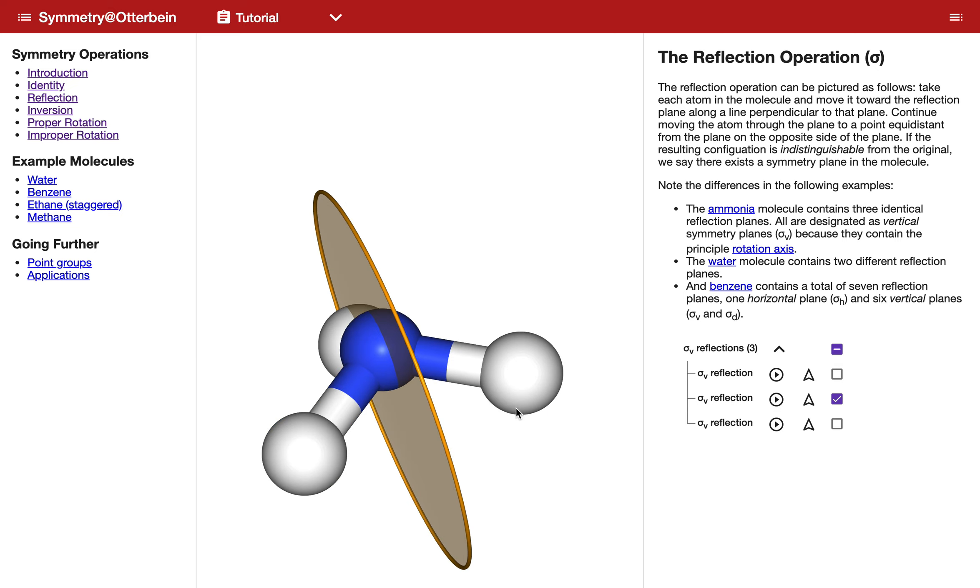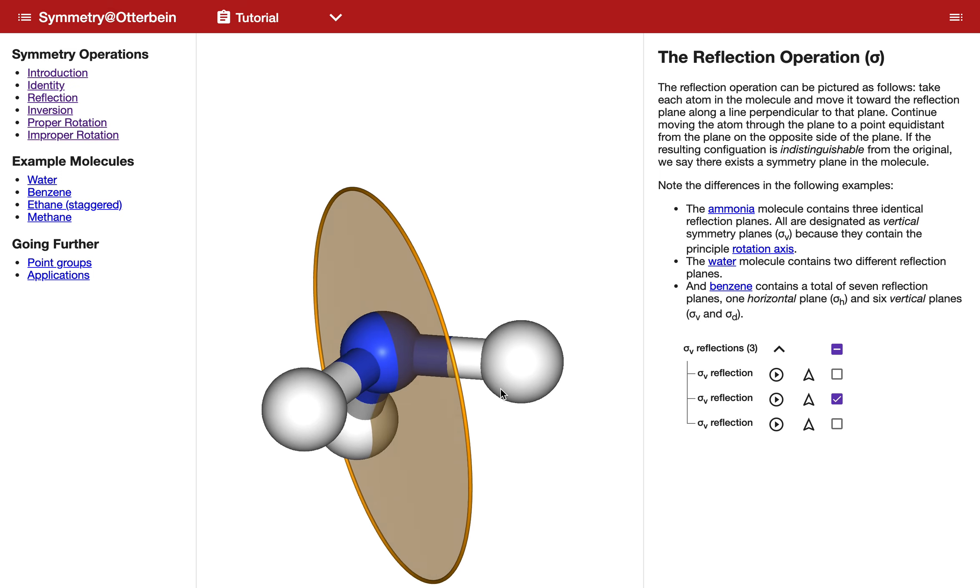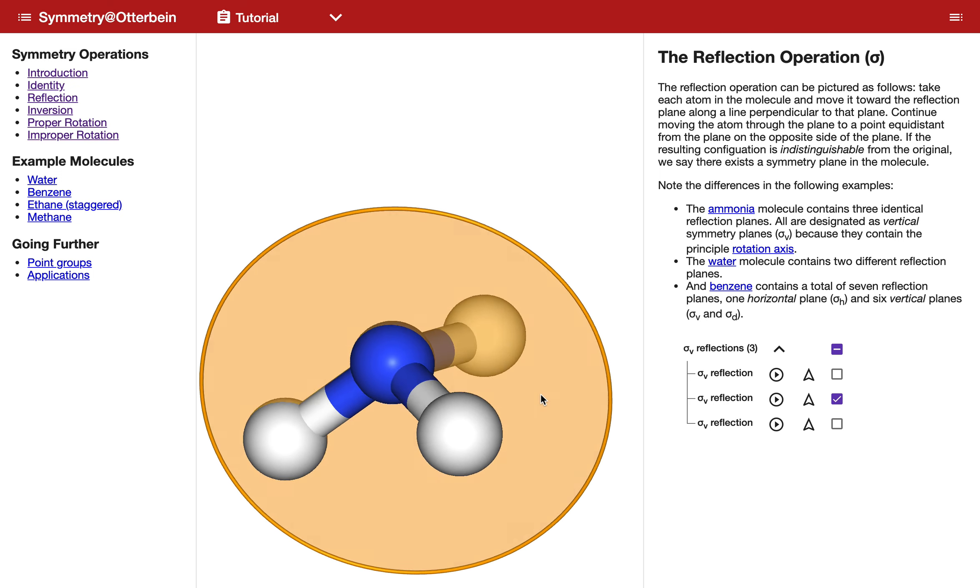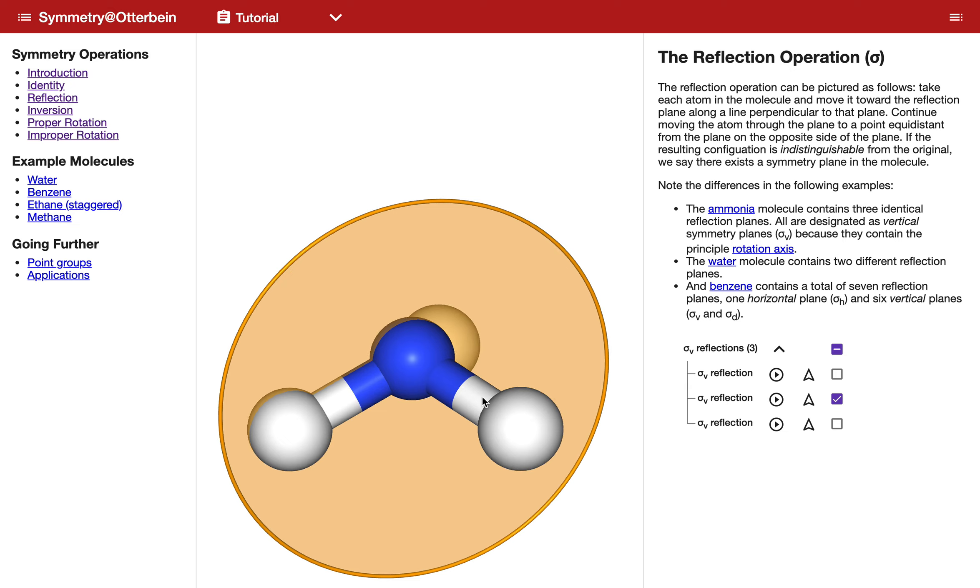It exchanges the two hydrogens with respect to that plane. Let me erase this plane so we can see that this is the one we're looking at. This is a way that you can examine the presence of elements in these different molecules and also see what the operations they correspond to look like.